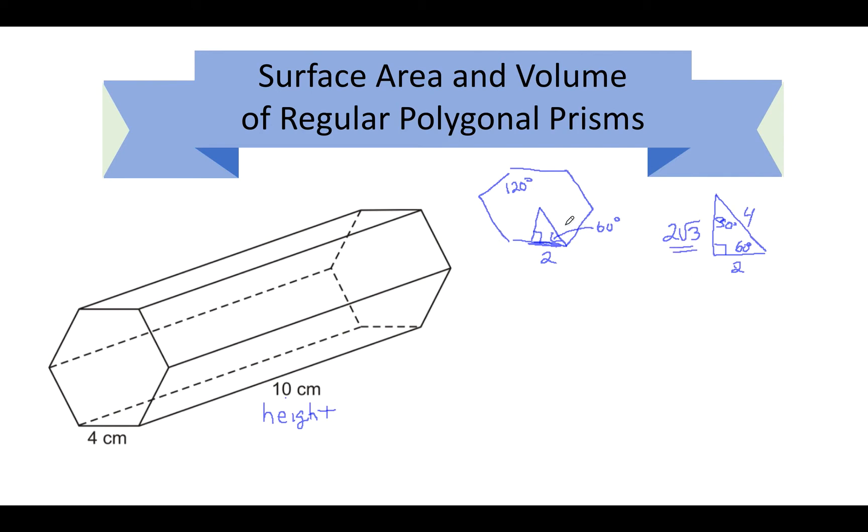So we got to find the area of the base. Area of the base is 1 half apothem times perimeter. So 1 half times the apothem here with 2 root 3 times the perimeter of this hexagon. So the perimeter of the hexagon, if you remember from before, is the number of sides times the length of the side. So it's 6 times 4, which is 24 centimeters.